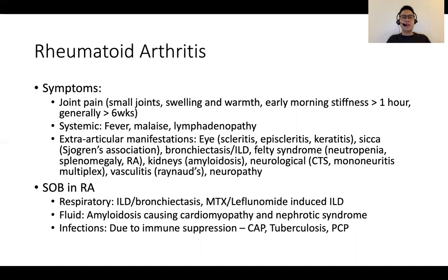In terms of extra-articular manifestations, there are multiple associations, and this is important because Station 5 scenarios oftentimes test for these. For example, it could be a patient presenting with breathlessness who has bronchiectasis or ILD, or a patient with lower limb swelling secondary to nephrotic syndrome caused by amyloidosis associated with rheumatoid arthritis, or a patient with numbness due to mononeuritis multiplex. It's important to think laterally.